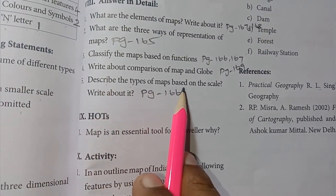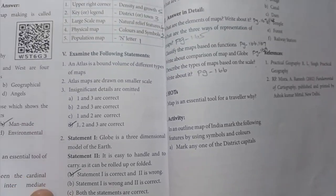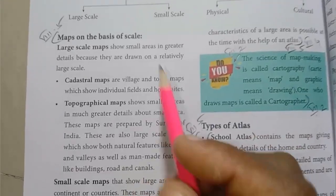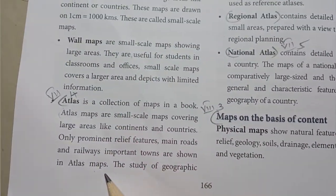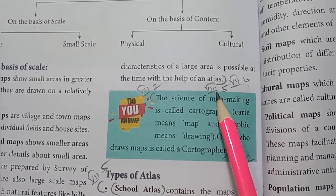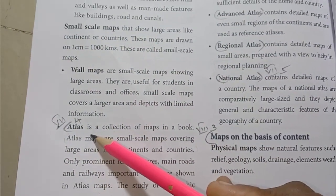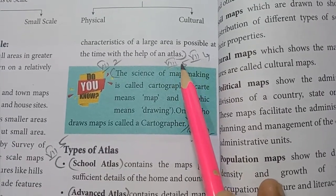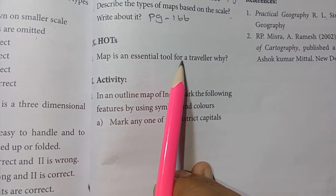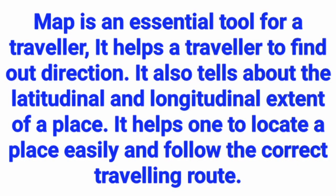5th one: describe the types of maps based on scale — page number 166. Based on the basis of scale: large scale map, cadastral map, topographical map, small scale maps, wall maps, and atlas. It helps the traveler to find out direction. It also tells about the latitudinal and longitudinal extent of a place. It helps one to locate a place easily and follow the correct traveling route.